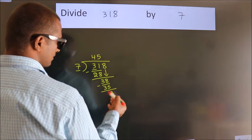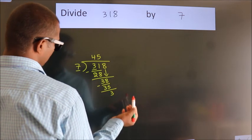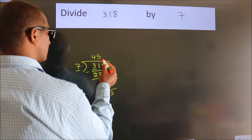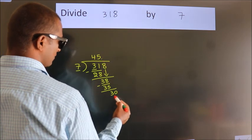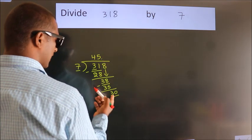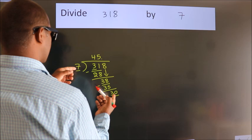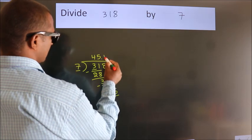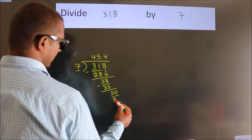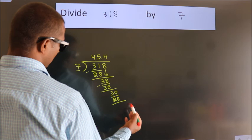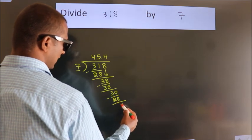After this, no more numbers to bring down. So what we do is, we put a dot and take 0. So 30. A number close to 30 in the 7 table is 7 times 4, 28. Now we subtract. We get 2.